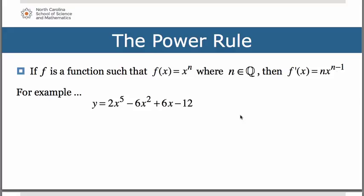So let me give you a quick example. If we had a quintic equation: 2x to the fifth minus 6x squared plus 6x minus 12, the derivative — y prime — you do 2 times 5, the coefficient times the exponent. That's 10x, and you subtract 1 away from the exponent, so now it's 4. Minus, now you do 6 times 2, that's 12x, take 1 away from that exponent — so that's just to the first.